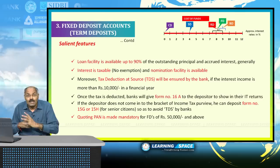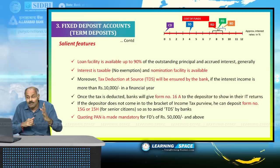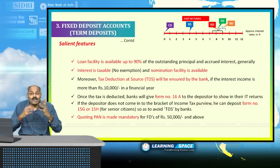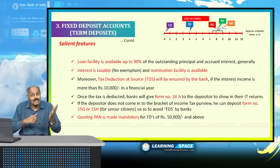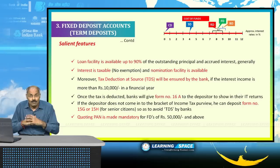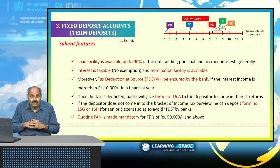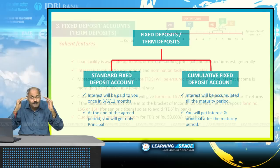Quoting your PAN number is mandatory when depositing 50,000 rupees or more. KYC guidelines are a must for any type of account, and we will discuss KYC in detail in subsequent lectures. Another important point: the other name for fixed deposits is term deposits. Within term deposits, there are two types: traditional or standard term deposits, and cumulative term deposits.